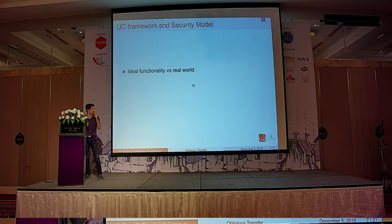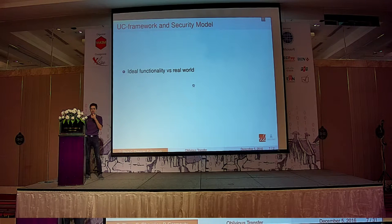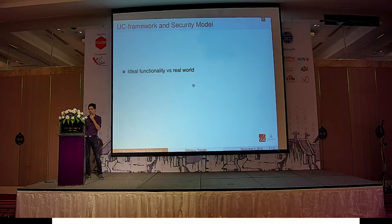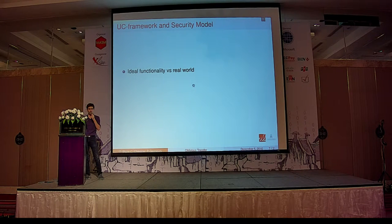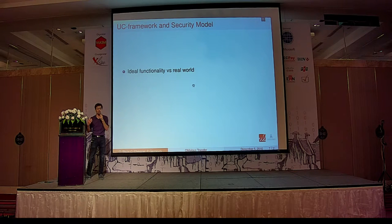In the UC framework we distinguish two worlds: the ideal world and the real world. In the ideal world, the user follows an ideal functionality where everything is specified — for example, the user has to erase the random coin at a certain moment, send the value at another moment, etc. In the real world, the user is totally free to do whatever he wants.